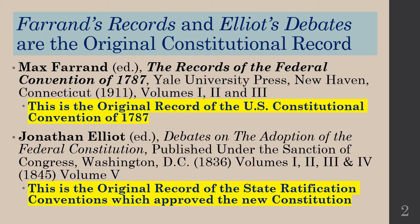Farron's records is the shorthand term for describing the original records of the Federal Convention of 1787, and Elliott's debates is the shorthand way of referring to the records of the debates in the state ratification conventions which approved the new U.S. Constitution and started our new country.